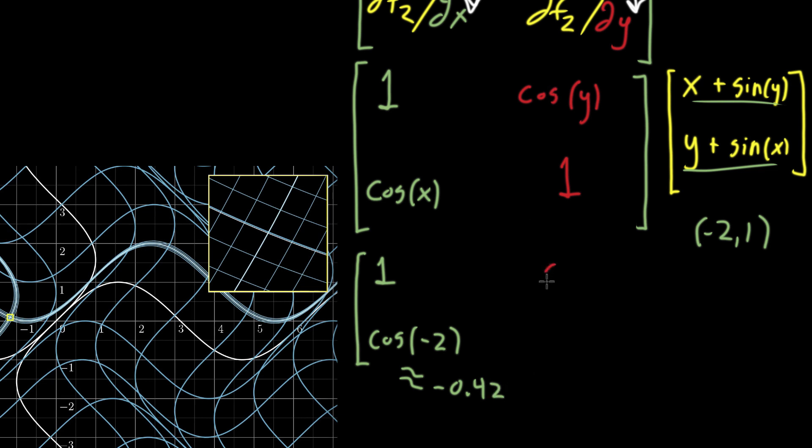Then for the upper right, we have cosine again, but now we're plugging in the value for y, which is 1. And cosine of 1 is approximately equal to 0.54. And then bottom right, that's just another constant, 1.